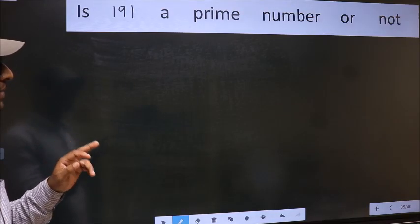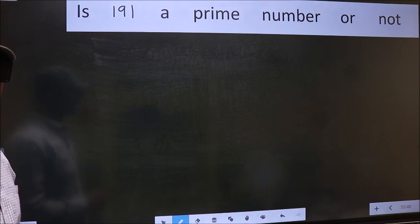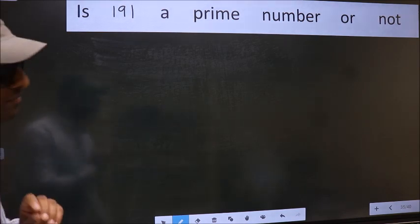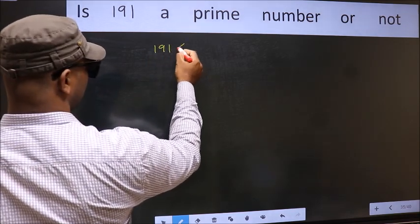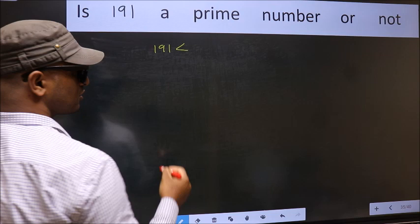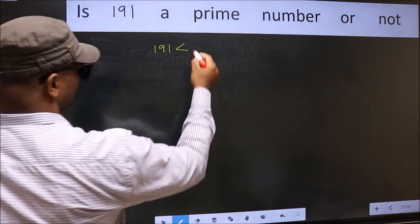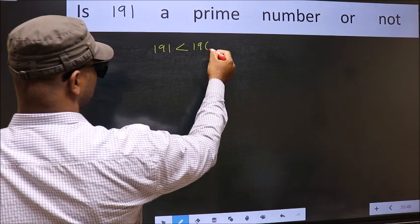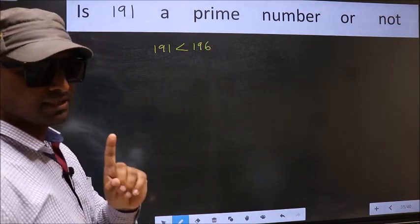Is 191 a prime number or not? To check whether the given number is prime or not, step 1: The given number is 191. This is less than and close to which perfect square number? That is 196. This is your step 1.